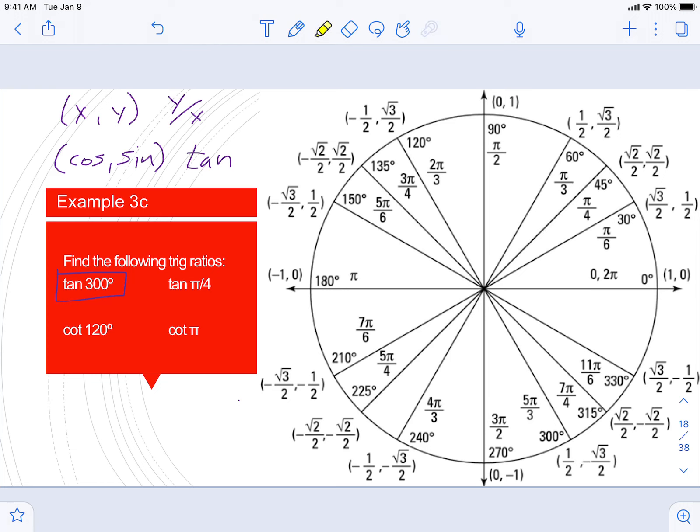So we'll start out with tangent of 300. Just like all the other ones, we're finding 300, and then now your unit circle will likely have an additional number outside the parentheses, which in this case is a negative square root of 3. That represents our tangent value, so the tangent of 300 is negative root 3.